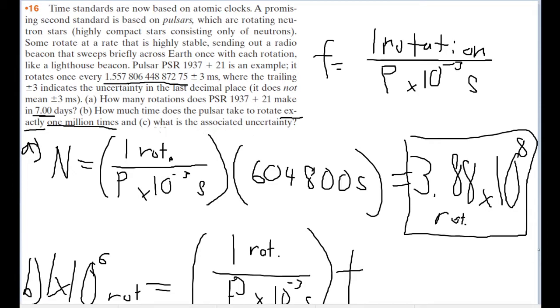Which is, what is the associated uncertainty? So for the uncertainty, the associated uncertainty we're given with the frequency, this plus or minus 3 for the little 5 here, we want to find the associated uncertainty with the rotation of a million times.